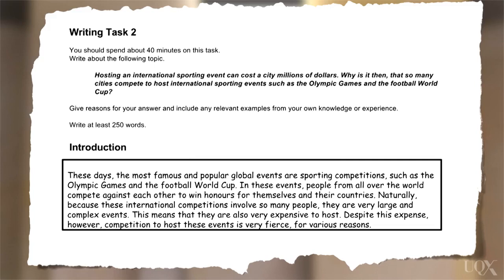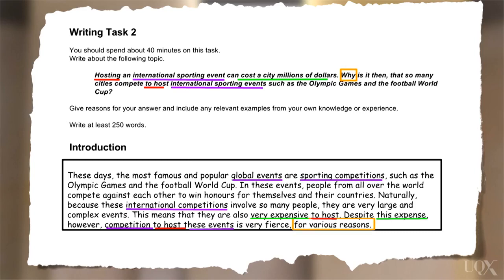We can see that a lot of the key words and phrases from the question have been paraphrased in the introduction — expressions like international sporting event, host, and the idea that this costs a lot of money, as shown by the different coloured lines. Importantly, the writer has also indicated that in this essay they will answer the question why countries compete to host these events, as shown by the phrase 'for various reasons.' So already from the introduction, the assessor can see that this task response seems to be on topic and will likely address all parts of the task with clear reasons.